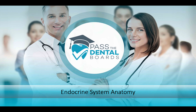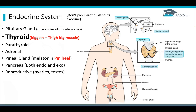We're going to start off our lecture on the anatomy of the endocrine system. One main type of question that you'll run into is just asking you to keep track of which glands are part of the endocrine system, and so we're going to start right there.